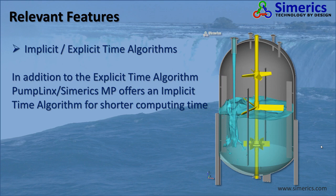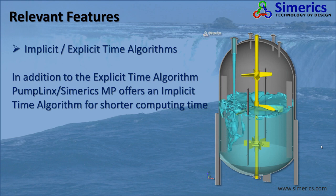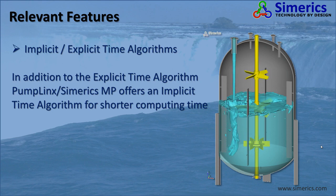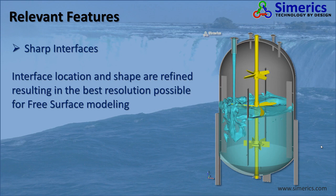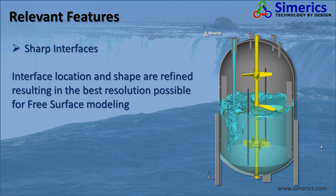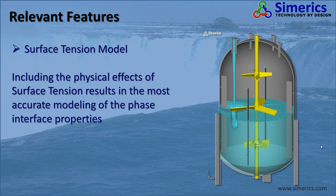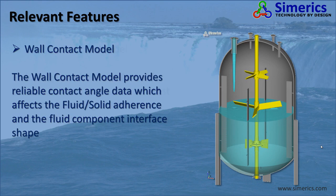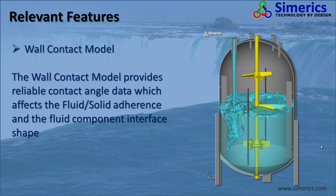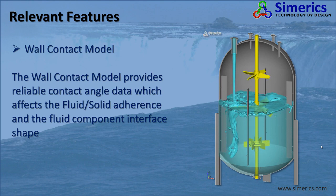Implicit and explicit time algorithms: in addition to the explicit time algorithm, PumpLynx and Sumerix MP offer an implicit time algorithm for shorter computing time. Sharp interfaces: Sumerix MP and PumpLynx offer higher-order surface reconstruction algorithms, which result in sharp interfaces. Surface tension model: in many types of multiphase flows, the surface tension plays an important role in the interface behavior, and the multiphase module takes this into account. Wall contact model: since surface tension is accounted for, PumpLynx includes the contact angle between liquids and solid surfaces so that the phase interface is predicted properly.